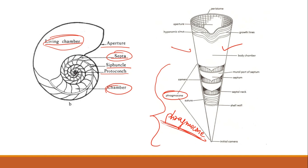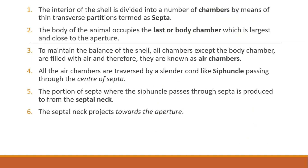With this, we have completed the internal morphology of nautiloidic shells. Next we will look at the external morphology. All the definitions and terms discussed have been provided in the slide — you may pause the video to note them down. Notes for these lectures will also be provided in PDF format. Feel free to ask any doubts in the comment section. Thank you so much.